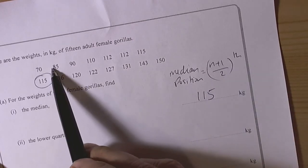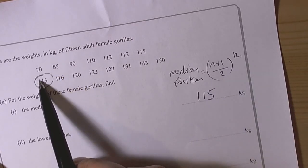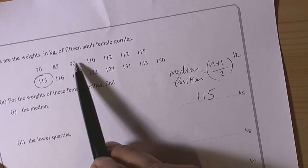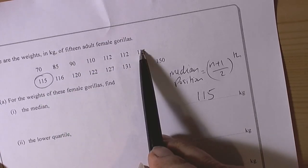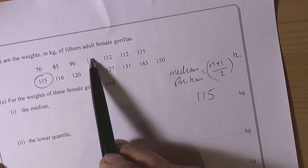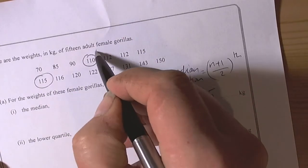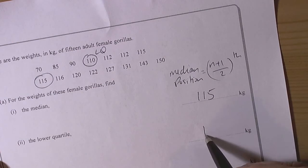The lower quartile, well we take the number of data points below that, so the middle position, so 1, 2, 3, 4, 5, 6, 7, add 1 to that 8, halved it is 4, so 1, 2, 3, 4. So the lower quartile value will be 110.